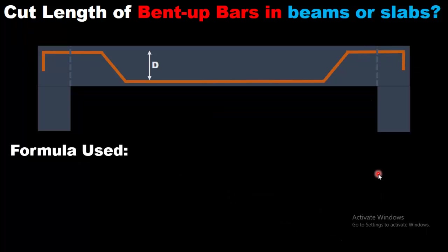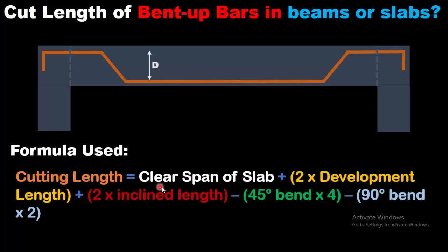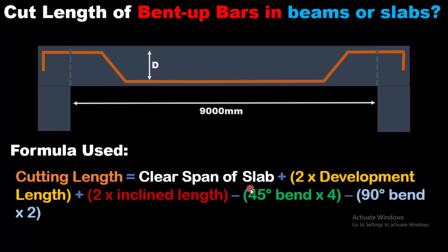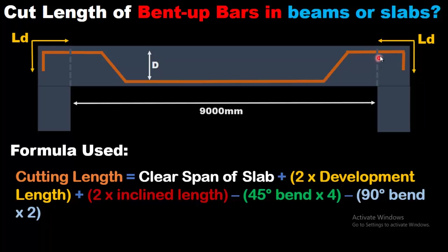The formula we are going to use is: cutting length equals clear span of the slab, which is 9000 millimeters, plus 2 times development length — also called anchorage length — provided at both ends of the beam or slab. As you can see, this is the length extending beyond the clear span of the slab or beam in the direction of L. That's why it is called development length.